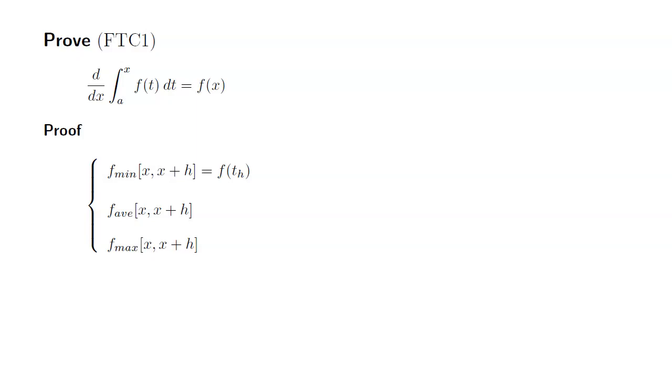The average value of the function can be found by integrating over the interval, then dividing by the length of the interval, so we have this formula here. The maximum value is the same. A maximum value can be obtained at some point, let's say capital T sub h. So maximum value is equal to f of capital T sub h.